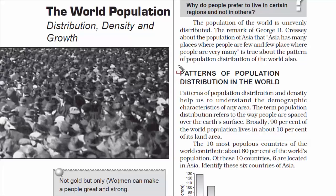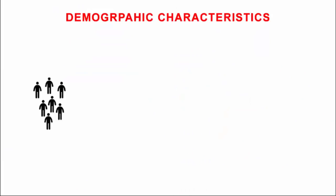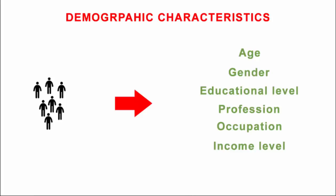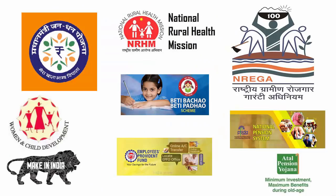The first topic of this chapter is patterns of population distribution in the world. Patterns of population distribution and density help us understand the demographic characteristics of any area. When we say demographic characteristics, we mean the age, gender, education, profession, occupation, income level, and marital status of the people. Knowing all of this is very important because it will give meaningful and actionable insights when implementing government policies and schemes towards the development of a nation.